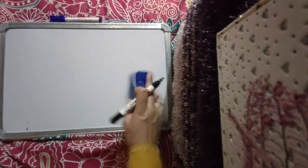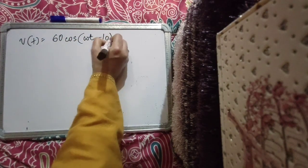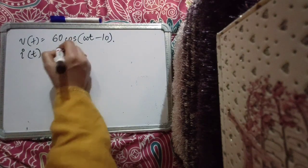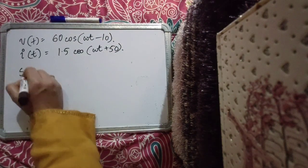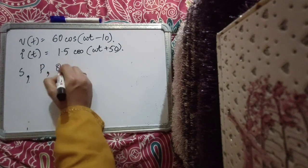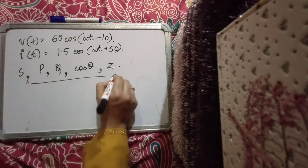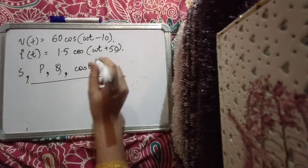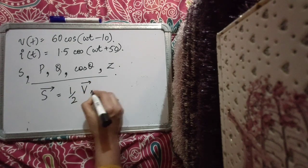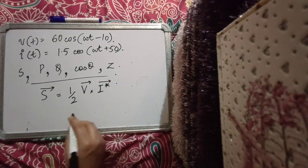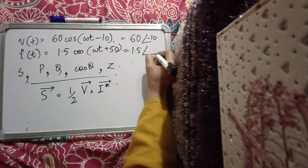Let's solve a question. Given voltage v(t) = 60·cos(ωt − 10°) and current i(t) = 1.5·cos(ωt + 50°), find apparent power, real power, reactive power, power factor, and impedance. The voltage phasor is 60∠−10° and the current phasor is 1.5∠+50°. The complex power S = (1/2)·V·I* = (1/2)·(60∠−10°)·(1.5∠−50°).